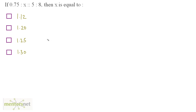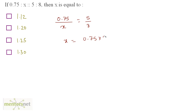If 0.75 is to x is proportionate to 5 is to 8, then x is equal to 0.75 times 8 divided by 5. Whenever two ratios are in proportion, those two ratios are equal. So 0.75 by x equals 5 by 8, which means x equals 0.75 times 8 divided by 5. This is equal to 6 by 5, which is 1.20. So option B is the correct answer.